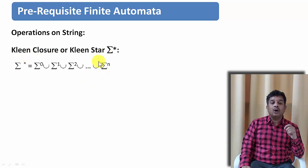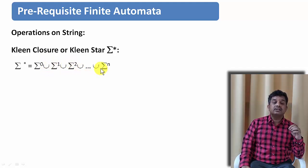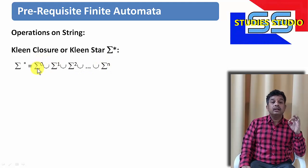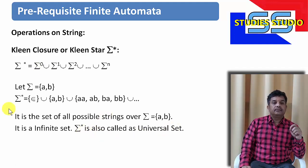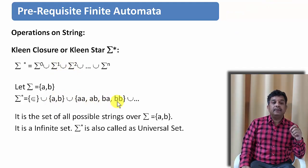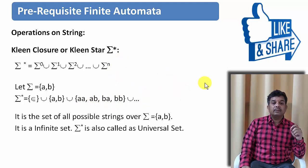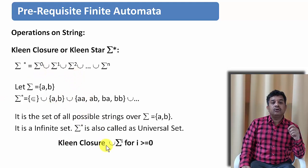This is also known as Kleene closure or Kleene star, represented by sigma star. The definition is: sigma star equals sigma⁰ union sigma¹ union sigma² and so on up to sigma^n. It means we take the union of all possible strings, and it is also called the universal set. So sigma star contains epsilon, then A and B from sigma¹, then AA, AB, BA, BB from sigma², and so on through sigma^n — it is clearly an infinite set. We can define Kleene closure as the union of sigma^i for i greater than or equal to 0.